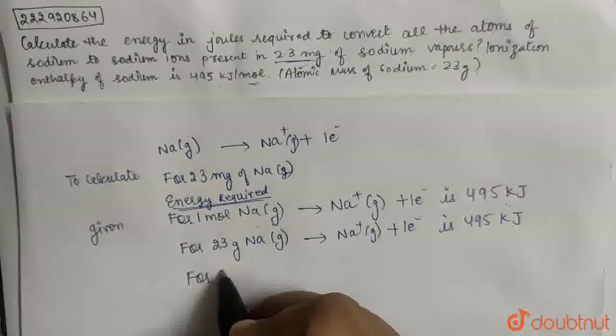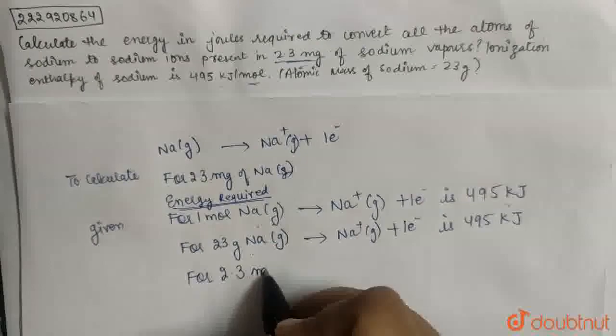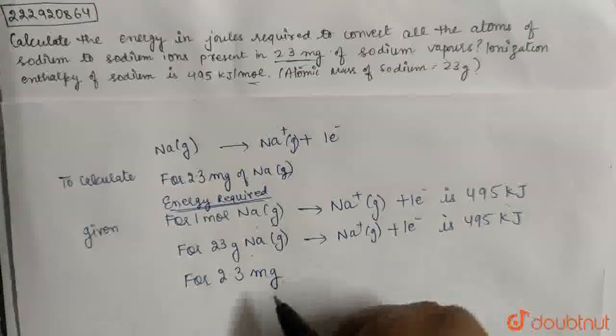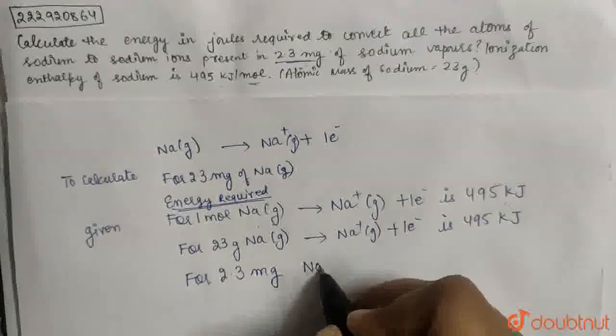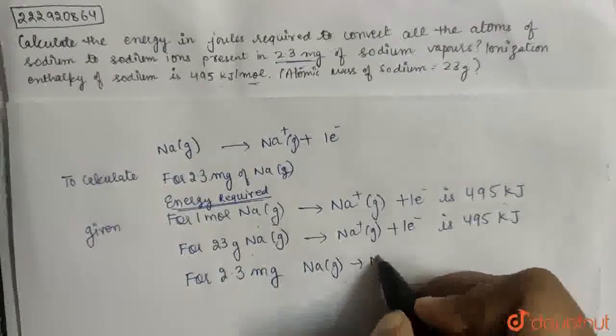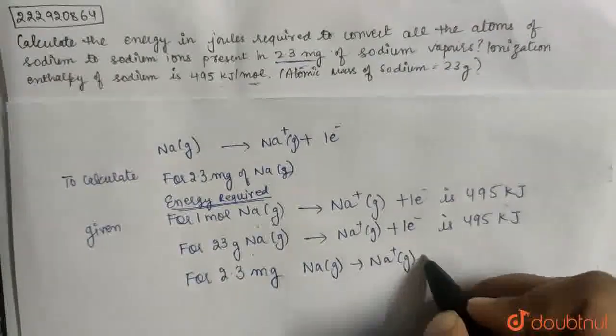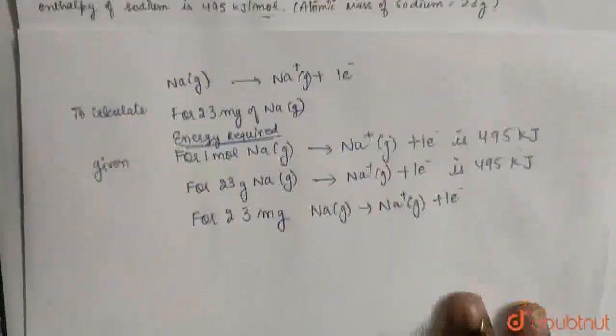Now we have to calculate for 2.3 mg. Okay, now 2.3 mg needs to be converted. For 2.3 mg of Na vapors to convert to Na positive gaseous plus 1 electron, energy required.